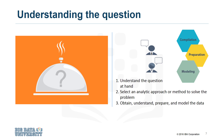In John Rollins' descriptive data science methodology, the framework is geared to do three things. First, understand the question at hand. Second, select an analytic approach or method to solve the problem. And third, obtain, understand, prepare, and model the data. The end goal is to move the data scientist to a point where a data model can be built to answer the question.